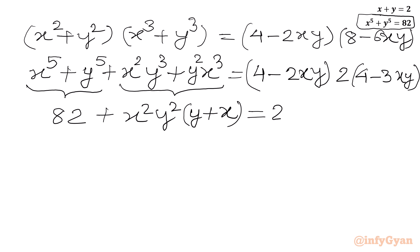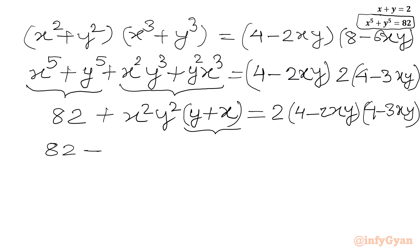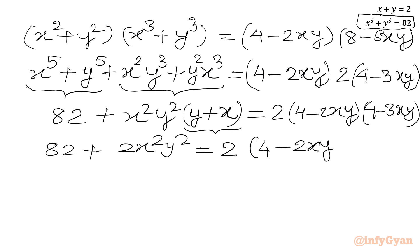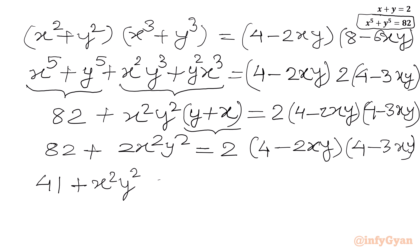On the RHS we can write 2 times 4 minus 2xy times 4 minus 3xy. Now x plus y is 2, so I can write 82 plus 2 times x squared y squared equal to 2 times 4 minus 2xy times 4 minus 3xy. We can see the equation is divisible by 2, so let's divide both sides by 2. I will get 41 plus x squared y squared equal to 4 minus 2xy times 4 minus 3xy.